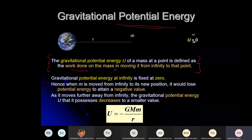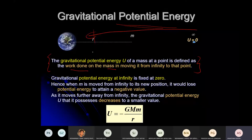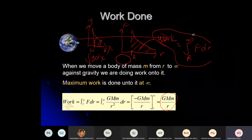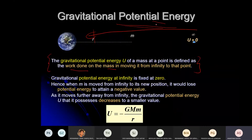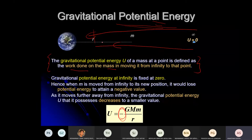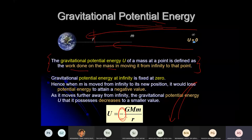So what is gravitational potential energy? The earlier derivation was for work done from r to infinity. But gravitational potential energy is defined as the work done to bring a mass from infinity to that point r. So the work is going to be negative — negative GMm/r — because you are moving from infinity to r. If you climb up you do positive work; coming down is negative work.